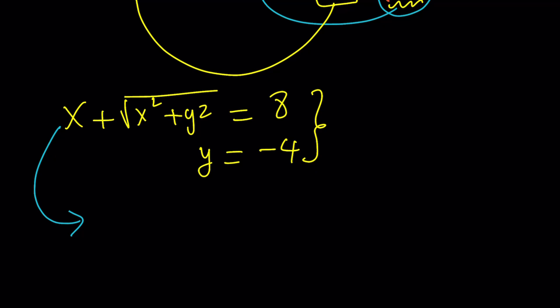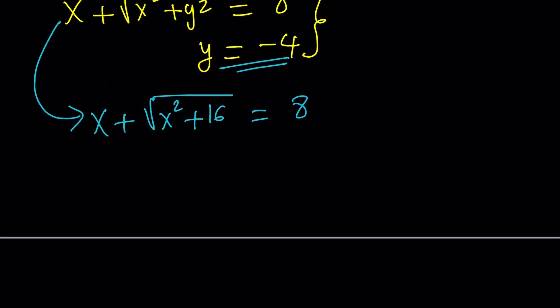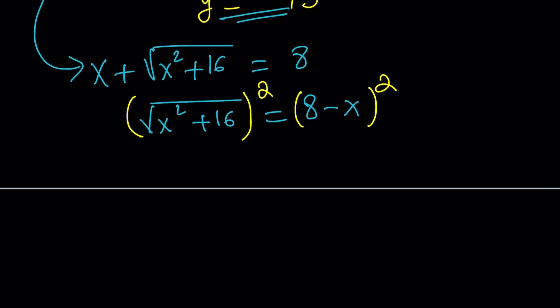Okay. Replace Y with negative 4. X plus the square root of X squared plus Y squared, which is 16, equals 8. This equation is not super easy to solve because it has a radical. But, don't worry, you can go ahead and isolate the radical and then square both sides and then find X. When you square both sides in an equation, because 2 is an even power, you have to be careful. You must check your work because at the end, it may not work. So, let's see.